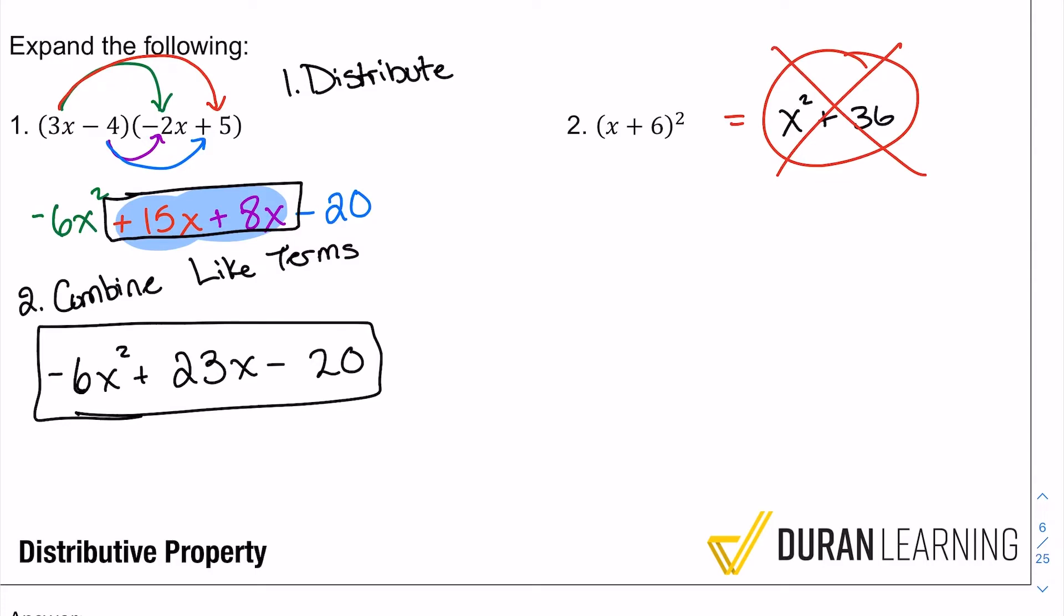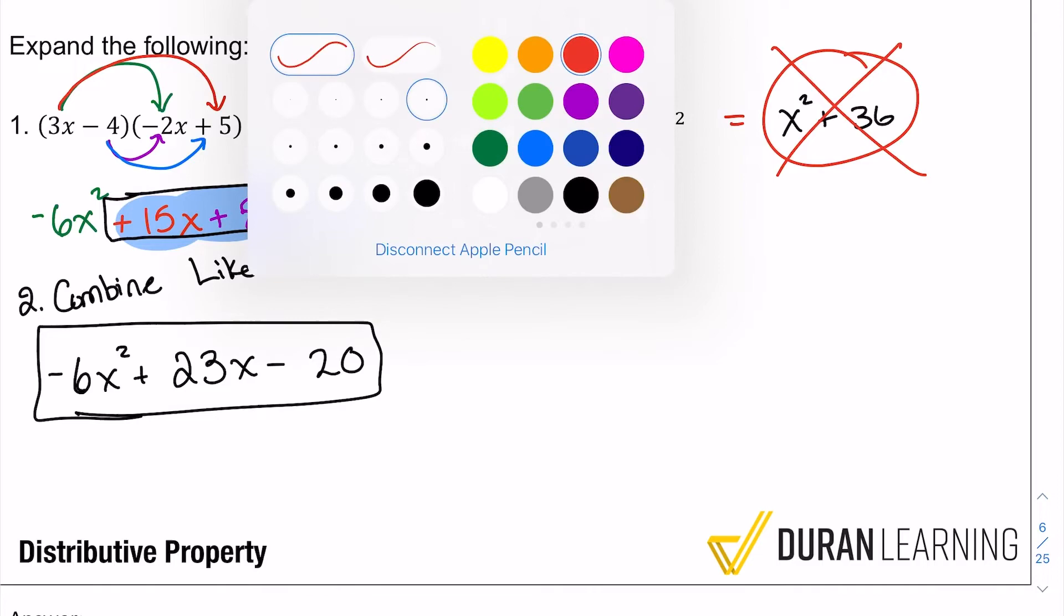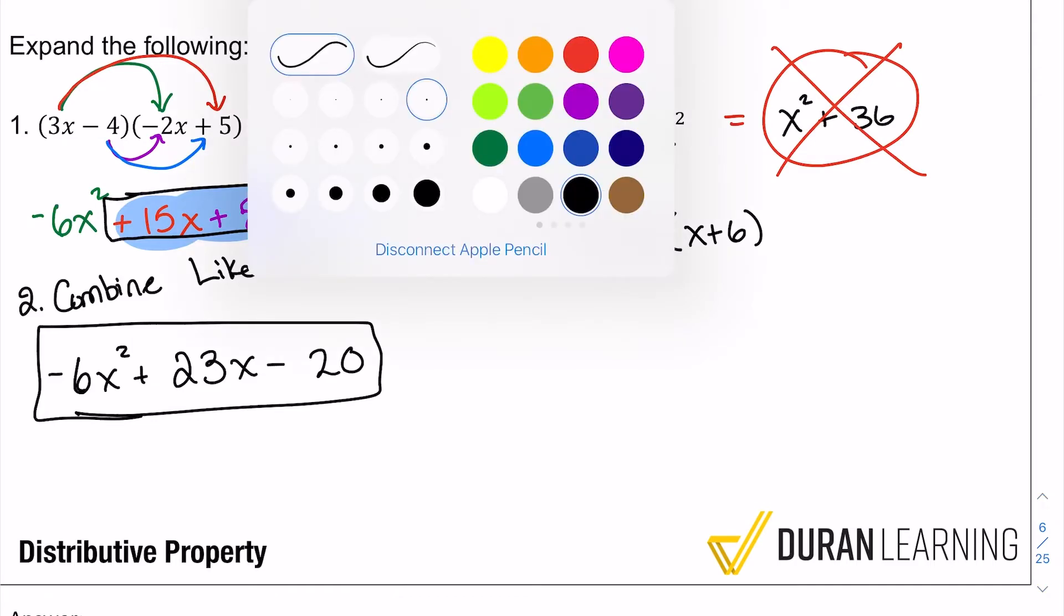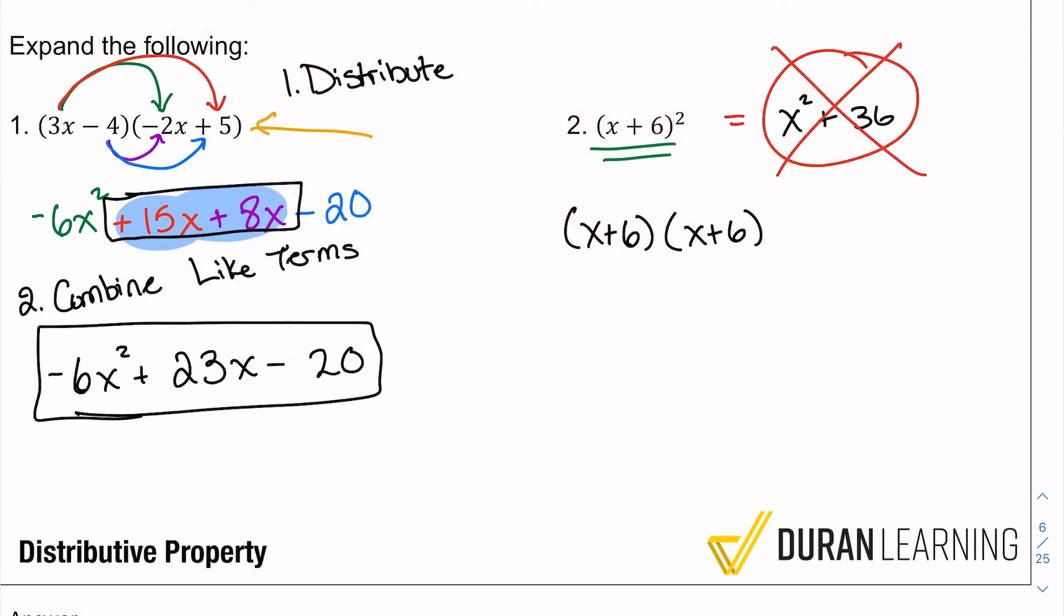Anything squared is that number times itself. So if I'm looking at this (x + 6)² , really what I'm looking at is (x + 6)(x + 6). And so now that we're looking at this, here's what we got to do. We got to go ahead now and do the same thing that we did over here: just make sure we distribute the right way and combine like terms.